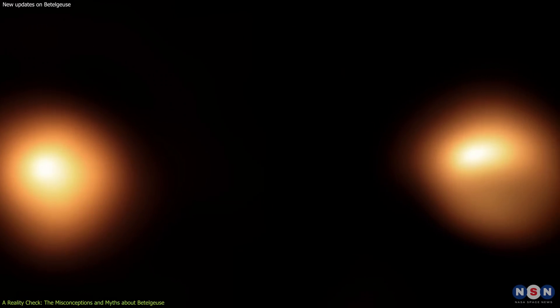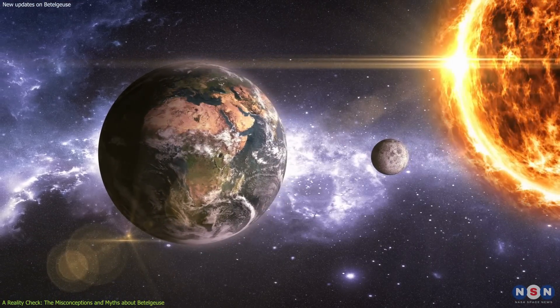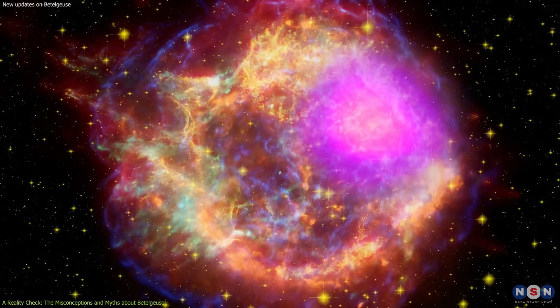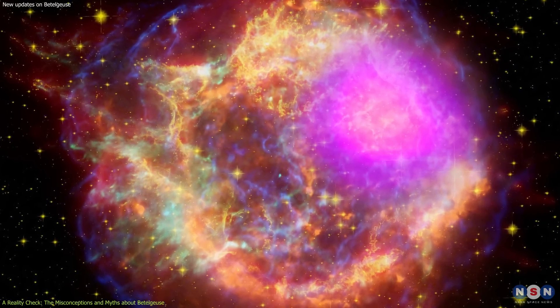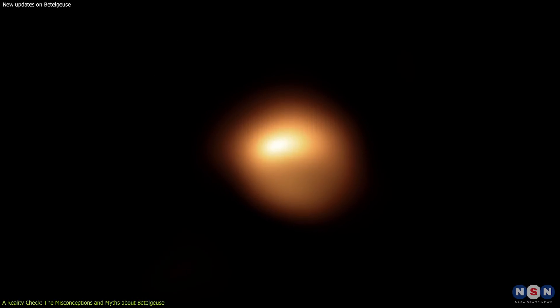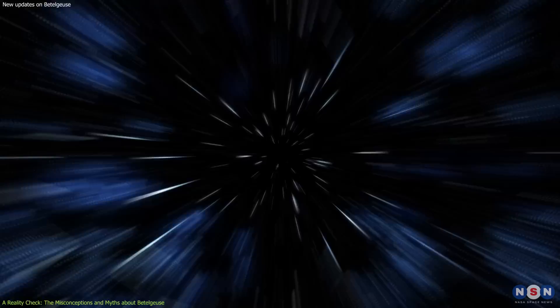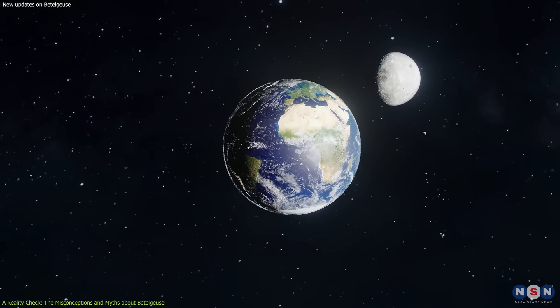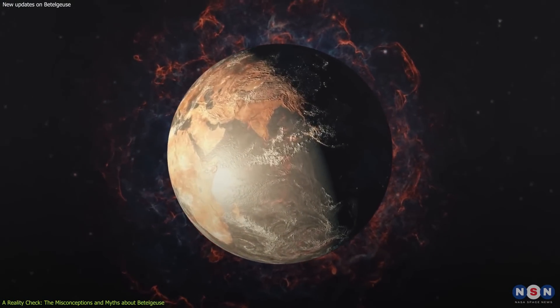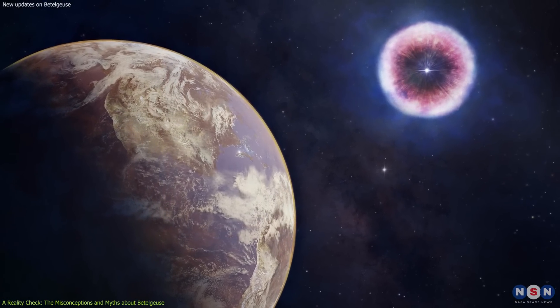Another misconception and myth about Betelgeuse and its dimming event is that if Betelgeuse does go supernova someday, it will pose a threat to Earth or life on it, as it is too close and too bright. A supernova is indeed a very energetic and luminous event that can outshine an entire galaxy for a brief period of time. But Betelgeuse is not close enough or bright enough to cause any significant damage or radiation to our planet or biosphere. It is about 700 light-years away from Earth, which means that it takes 700 years for its light to reach us. That's far enough to make it safe for us to observe and enjoy its spectacle without any harm.